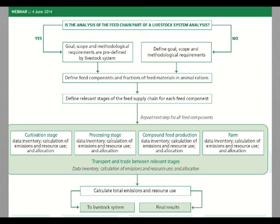For each feed component you define the relevant stages of the complete supply chain — in some cases only the cultivation stage, in others a combination of cultivation, processing, compound feed production, and on-farm stages. As a link between those stages you have transport and trade. This process is repeated for all feed components. At the end, all data per feed component are combined and weighted averages are made. This can be a final result for a feed chain analysis, or it feeds into a broader livestock system analysis.